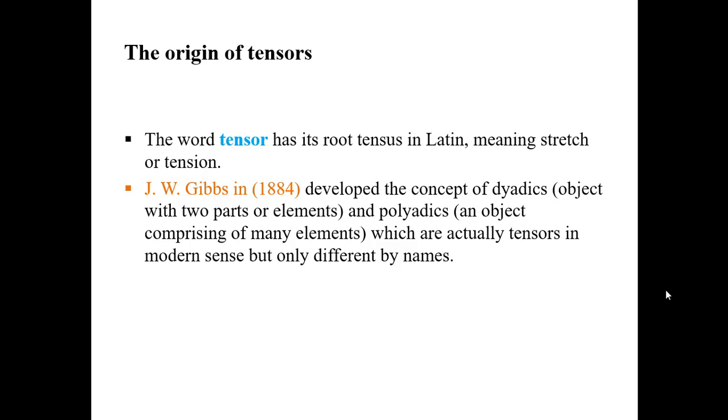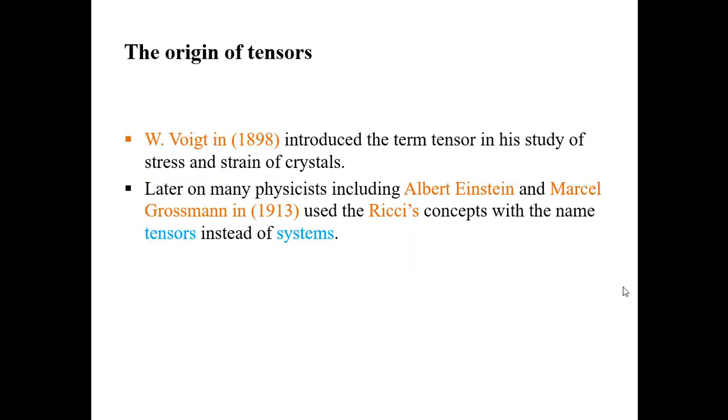G.W. Gibbs in 1884 developed the concept of dyadics, an object with two parts or elements, and polyadics, an object comprising of different elements, which are actually tensors in modern sense but only different by names. This can be regarded as the origin of tensors and gives the concept of tensors which is only different by names.